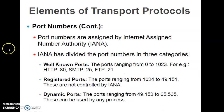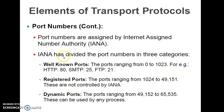Port numbers are categorized into three types: well-known port numbers, registered port numbers, and dynamic port numbers. These are assigned by an authority called IANA, which stands for Internet Assigned Number Authority. Well-known port numbers range from 0 to 1023. For example, port 80 is associated with HTTP (Hypertext Transfer Protocol), port 25 is associated with SMTP (Simple Mail Transfer Protocol), and port 21 is associated with FTP (File Transfer Protocol).